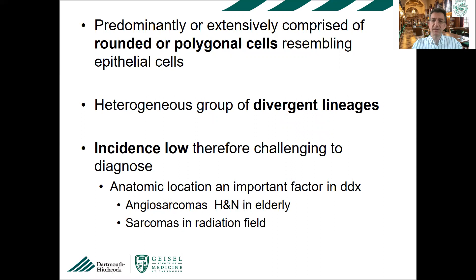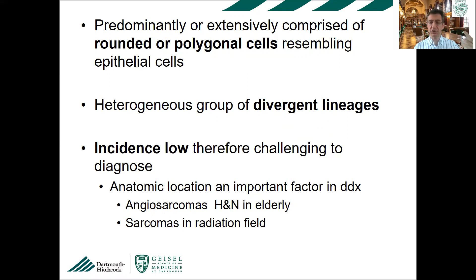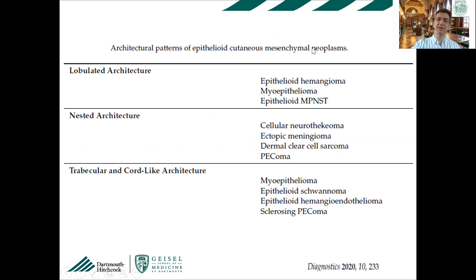The incidence is quite low for these neoplasms. These tumors are very challenging to diagnose, and the anatomic location is an important factor to take into account for your differential diagnosis. For example, a malignant epithelioid on the head and neck from the mesenchymal group — an epithelioid angiosarcoma will be very high on your list, or if you have a history of radiation in the field, then a radiation-induced sarcoma with epithelioid features will be very high on your list.